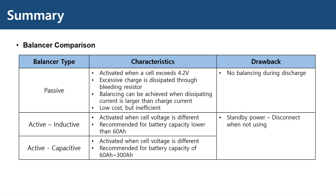The active balancer is activated when the voltage between cells are different, regardless of charging or discharging. Inductive types are recommended for cell capacity of less than 60 amp hours. Capacitive types are recommended for cell capacity of 60 to 300 amp hours. Active balancers also require standby power, so if you are not using the cells for a while, it is better to disconnect the balancer.